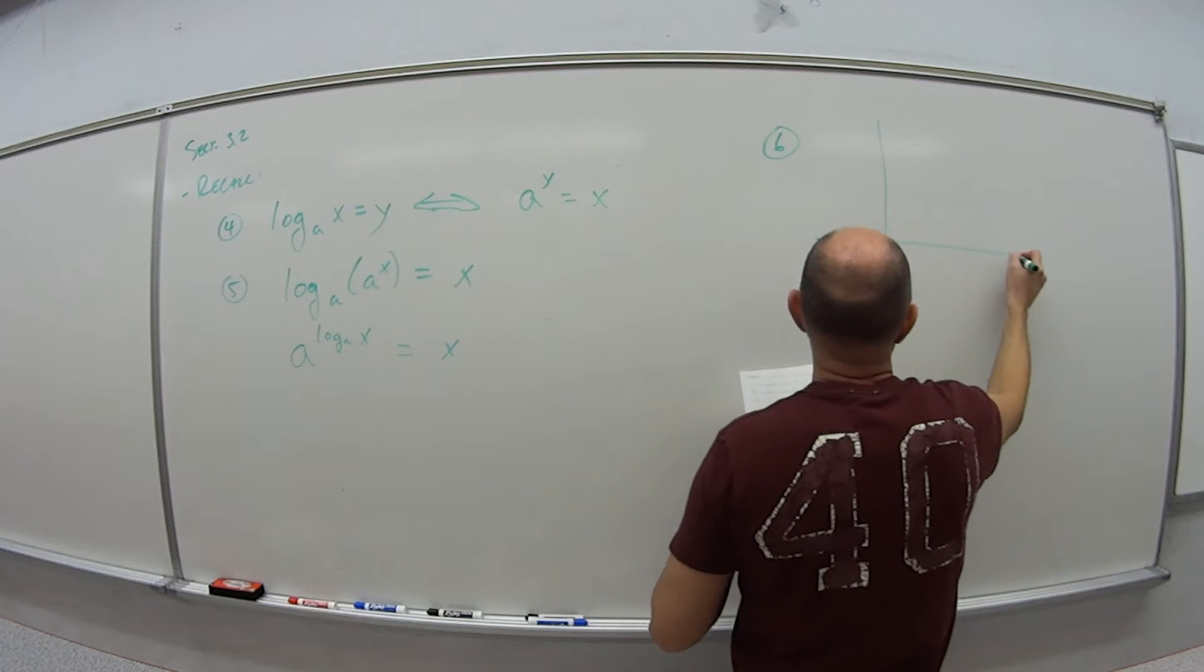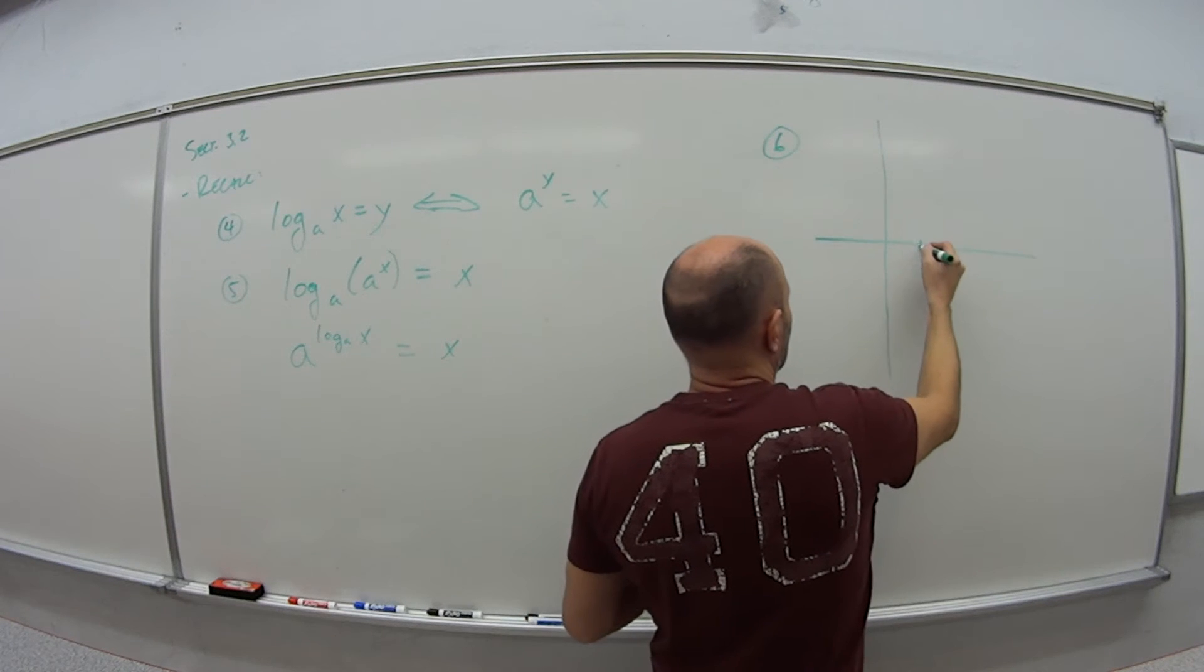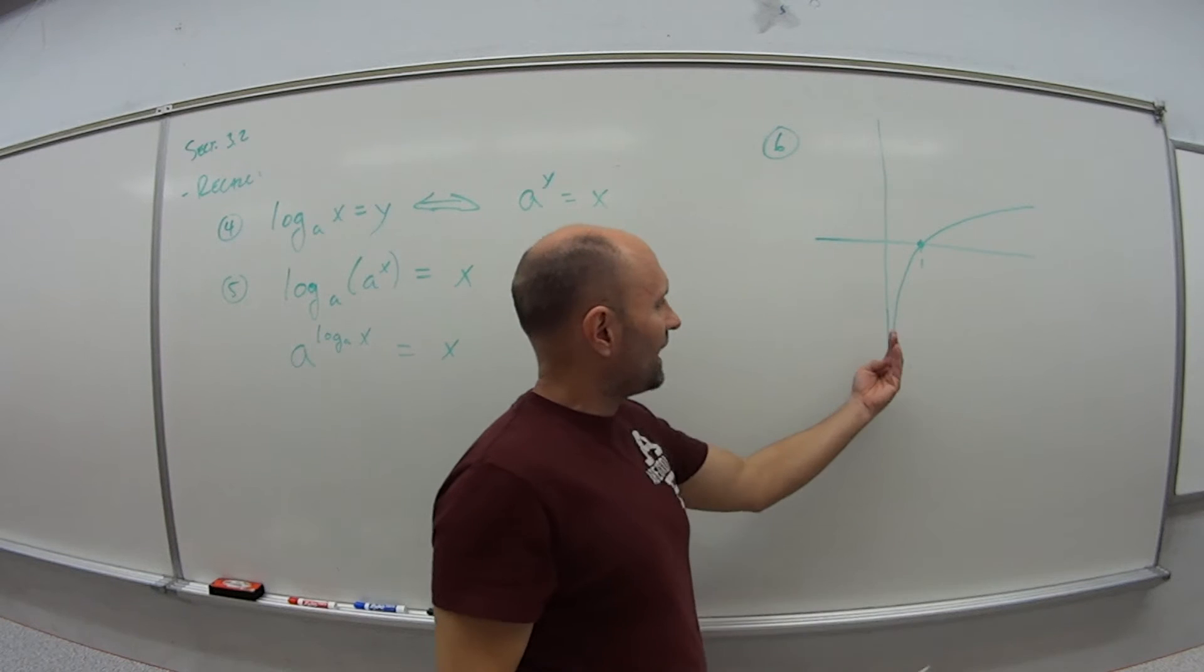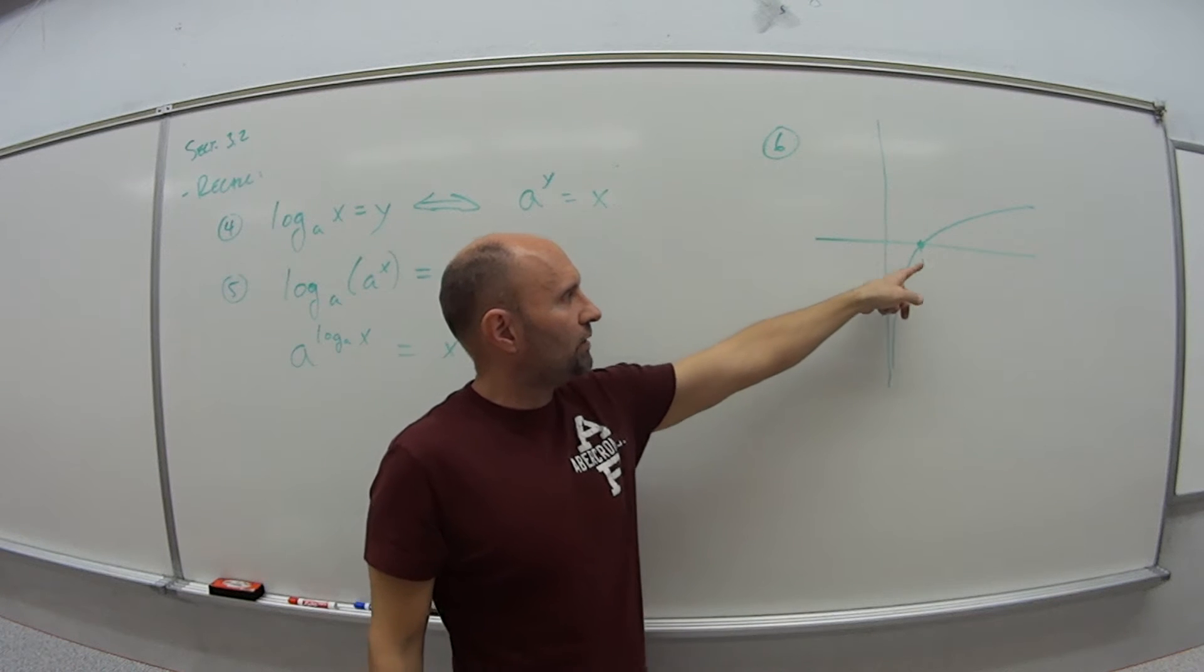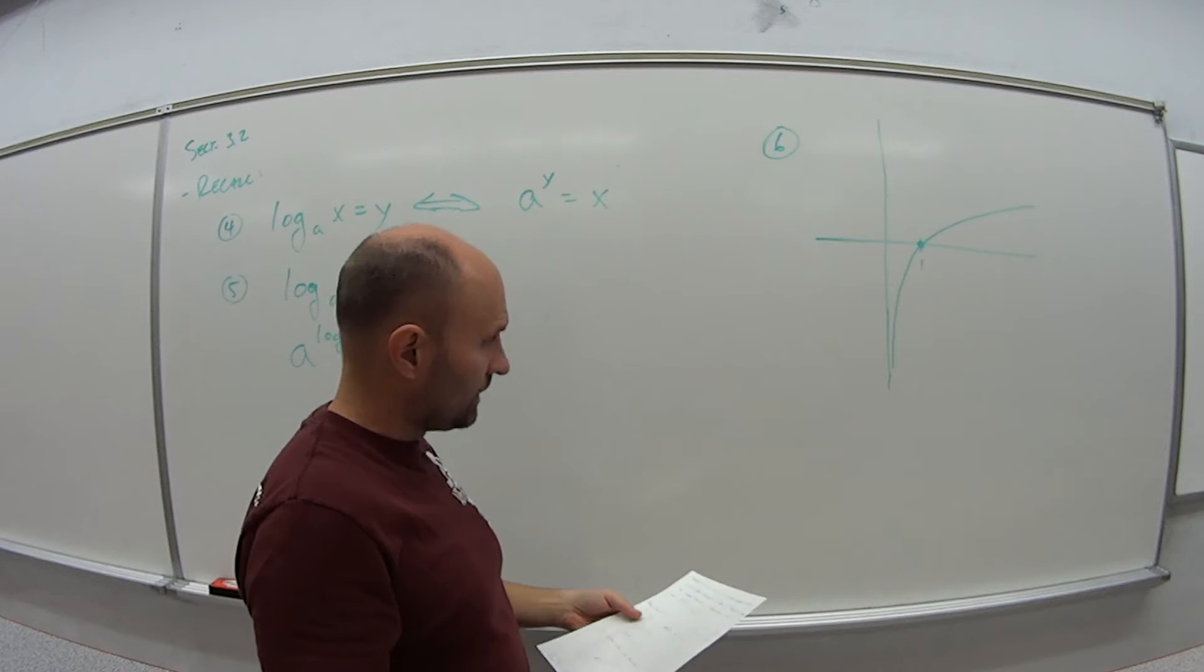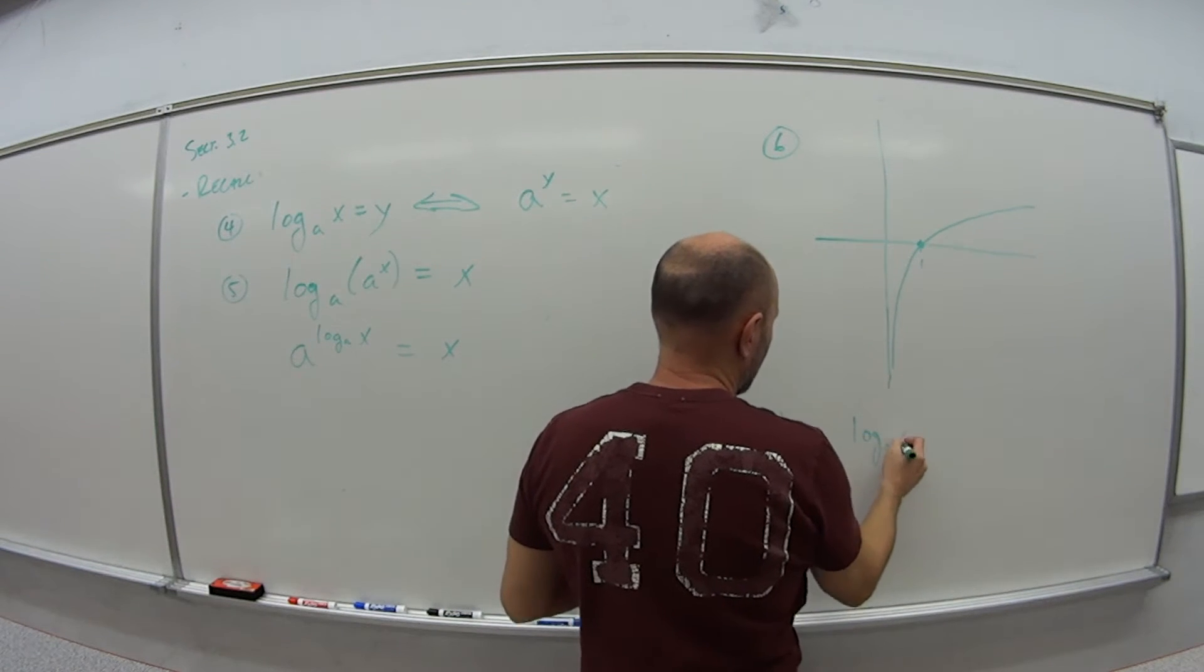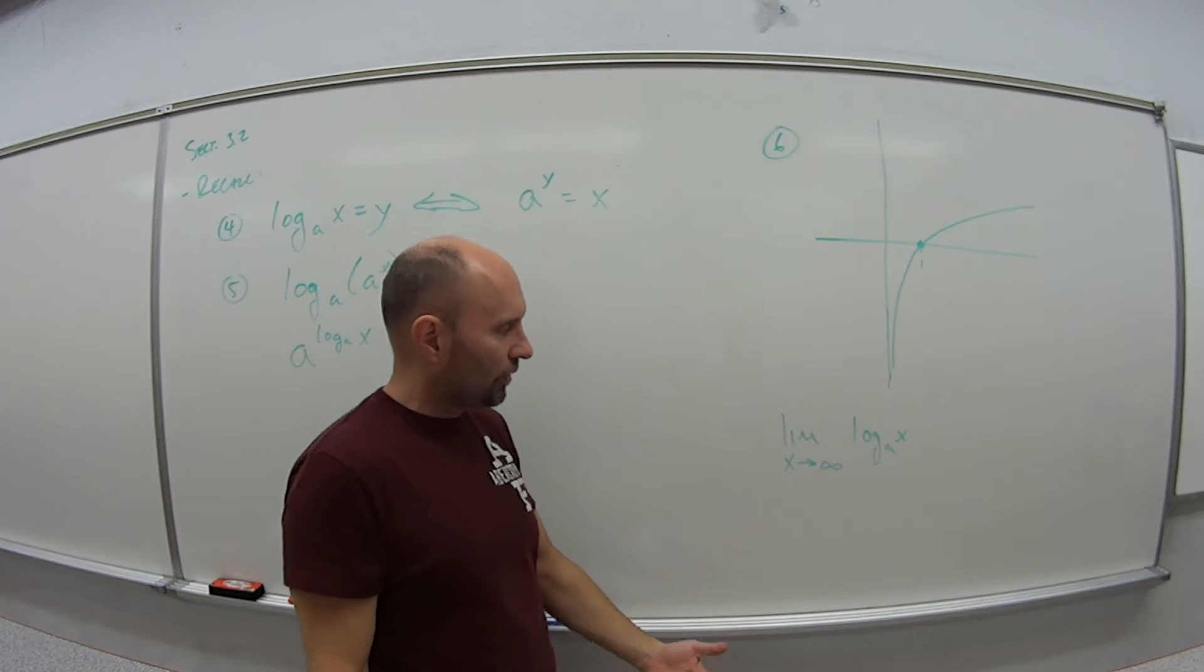If I have just a basic log function, at X equals 1, the log function is 0. And a graph of a log function looks like that. The log can never take negative values. It's always got to be positive values. It's 0 when X is 1, and then goes off to positive infinity. So we have that the limit as X goes to infinity of log base A of X, no matter what the base is—log base 10, log base 2, log base 20, doesn't matter.